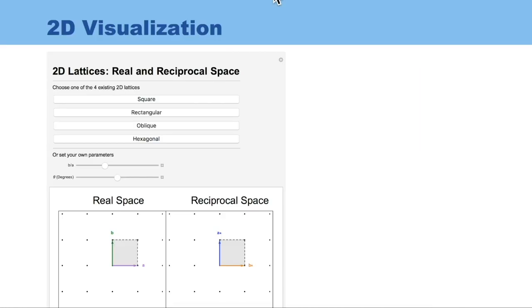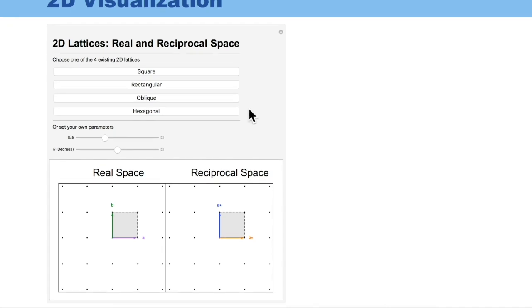Now, we are going to compare unit cells in real and reciprocal space to better visualize the change from real to reciprocal space. As I said earlier, there are four types of 2D lattices. In this image, you can see the real space lattice, and in this image, you can see the reciprocal space lattice.